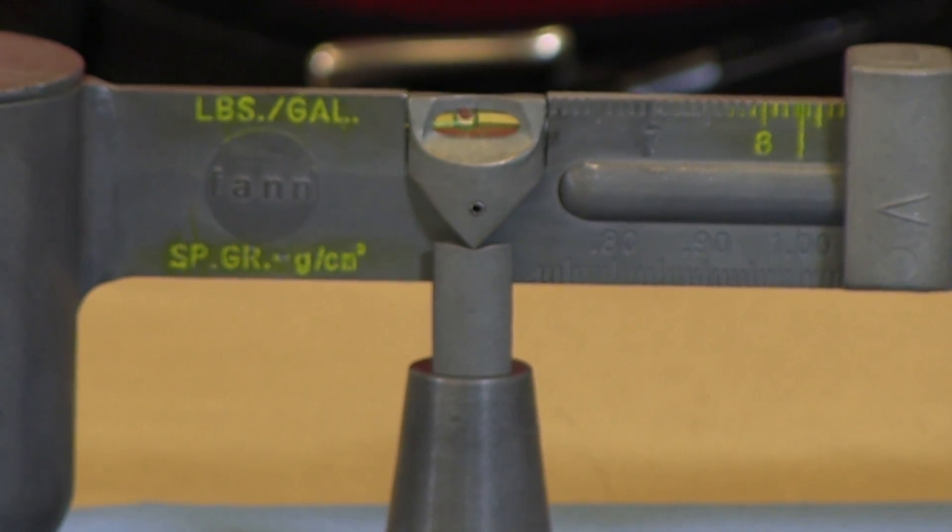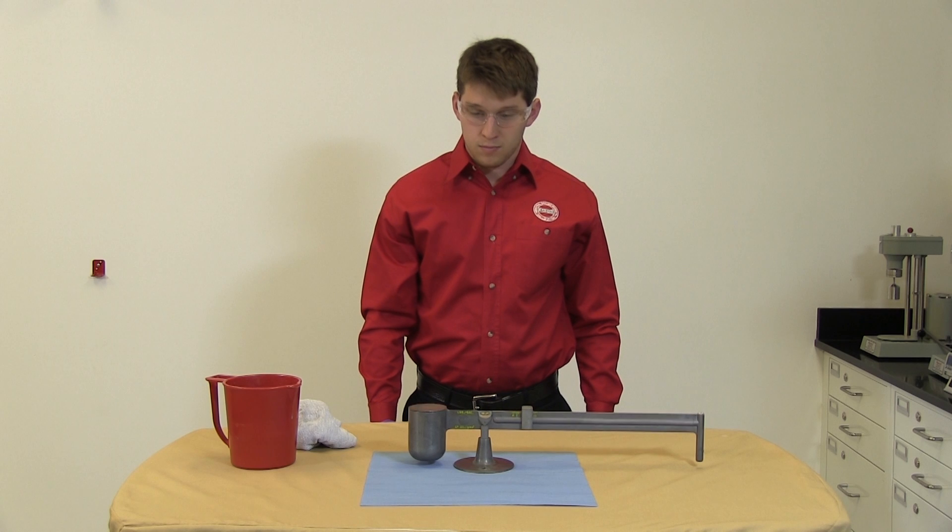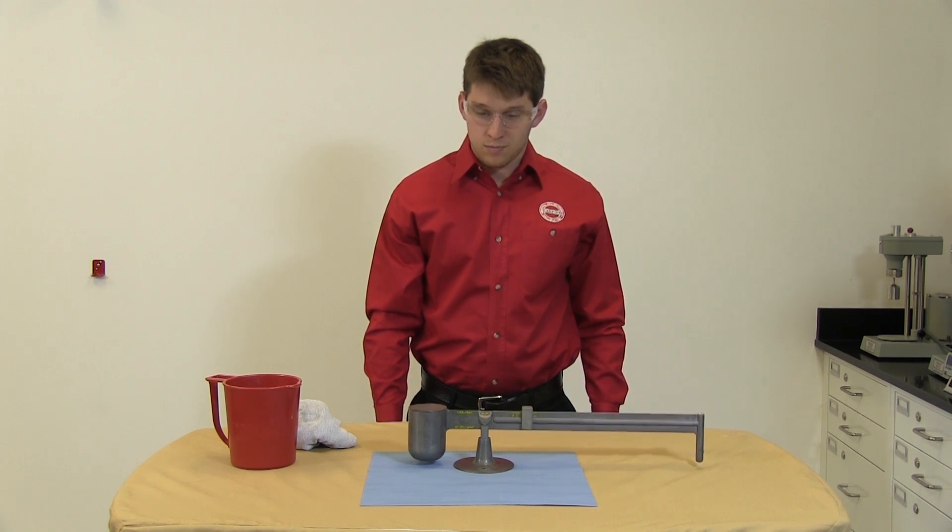On the back of the scale, we can read the weight in pounds per cubic foot or psi per thousand feet of depth.